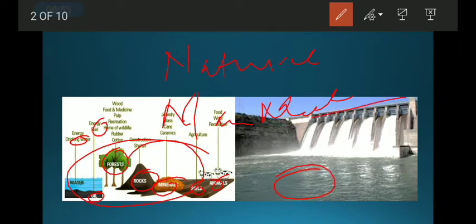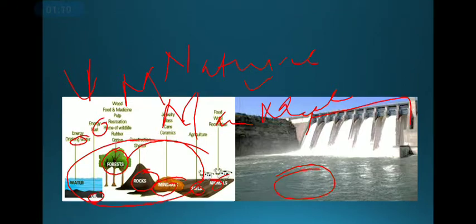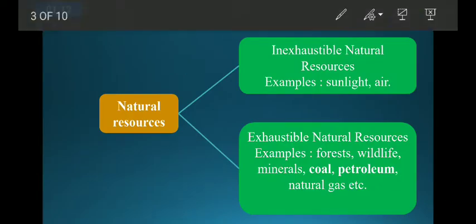But the dam is a man-made resource. Vehicles and machines are also man-made resources. Out of these natural resources, they can be categorized into two categories.